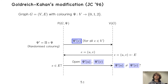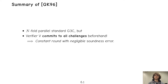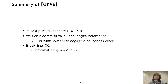So we use a different protocol: the Goldreich-Kahan protocol, which modifies graph three-coloring as follows. We choose the challenges as the very first step and then the verifier commits to its challenge choices. The rest is basically the same: the verifier opens its challenge and the prover checks the opening. With this we can do an n-fold parallel repetition and get a constant-round protocol with negligible soundness error. It can be shown that this is black-box zero-knowledge, though the proof is somewhat tricky.